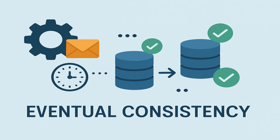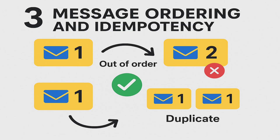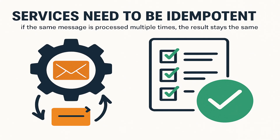Another thing to watch out for is the order of messages. Sometimes messages can arrive out of order or even be delivered twice. To handle this, services need to be idempotent. Idempotency means if a message is processed multiple times, the result stays the same. This prevents duplication and errors in your data.